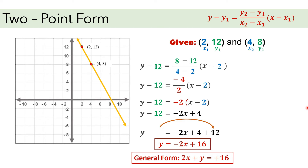We may write our answer in slope-intercept form or in general form. If we write this in slope-intercept form, we have to leave y alone on the left side, meaning we will transpose negative 12 to the other side. Since this is negative and we transpose it, it will become positive 12. Then combine it with positive 4: 4 plus 12 gives us 16. Therefore, the answer is y equals negative 2x plus 16. We may also write this in general form: 2x plus y equals 16.